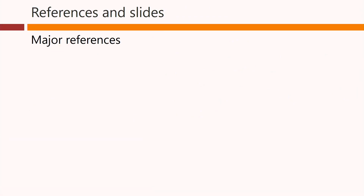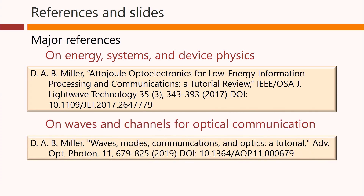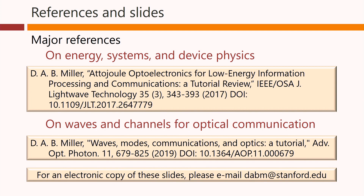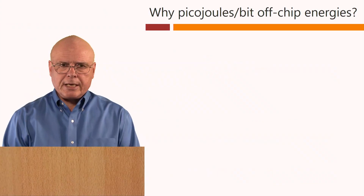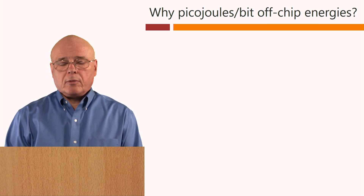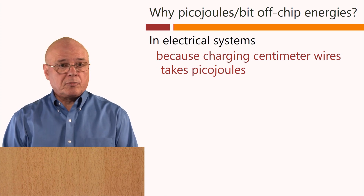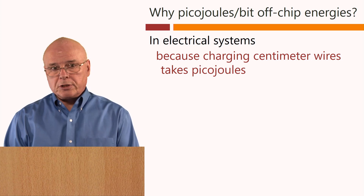There are two major references that support this talk — one on energies, systems, and device physics, and a second giving a deep review on waves and channels for optical communications. Now, we are using picojoules per bit for off-chip communications. In electrical systems, that's because we're charging wires: centimeters of wires have picofarads of capacitance, and we take picojoules of energy to charge them up. In optical systems, there are three reasons why we're using so much energy.